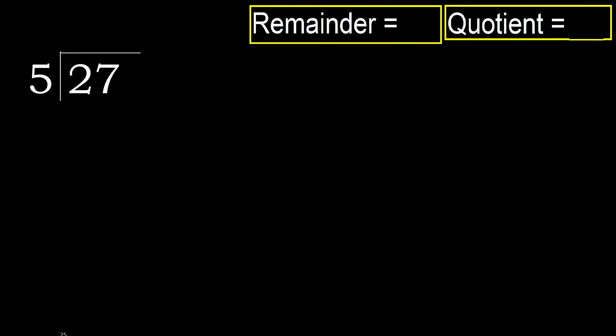27 divided by 5. 2 is less, therefore next. 27 is not less, therefore with 27 — 5 multiplied by which number is nearest to 27, but not greater.